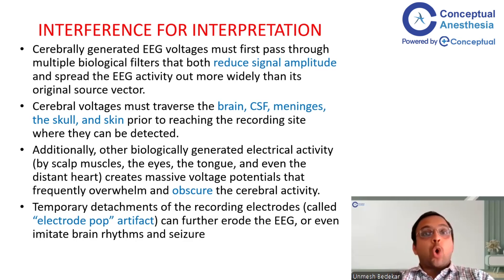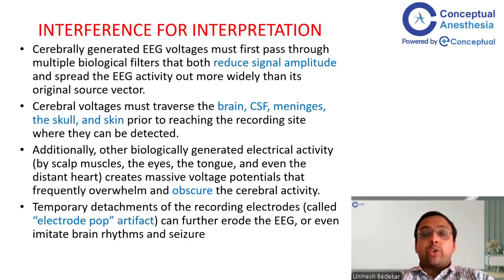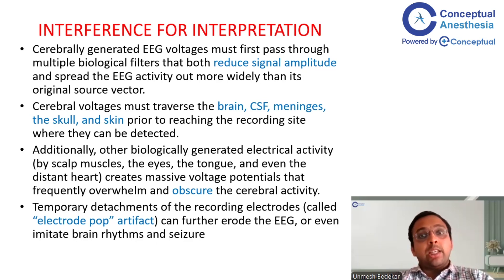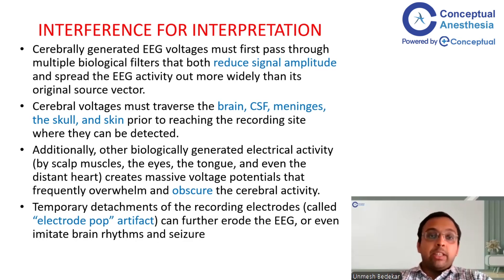In fact, one of the most common artifacts encountered while reading EEG is movement of the eyes, which obscures the cerebral activity. Temporary detachment of recording electrodes — called an electrode pop artifact — may further erode the EEG or even imitate brain rhythms and seizures. So an electrode pop-out may act as a bias, leading you to misinterpret the EEG as showing a seizure.